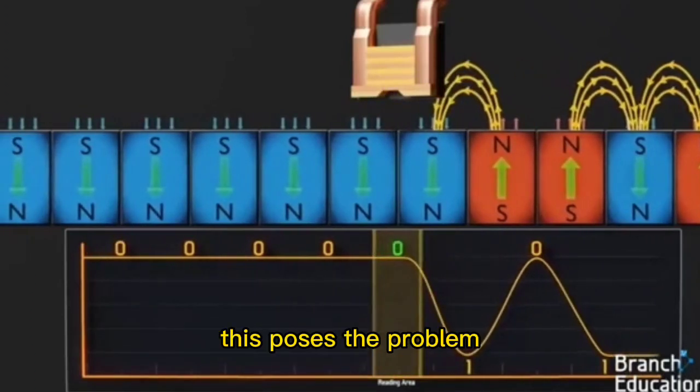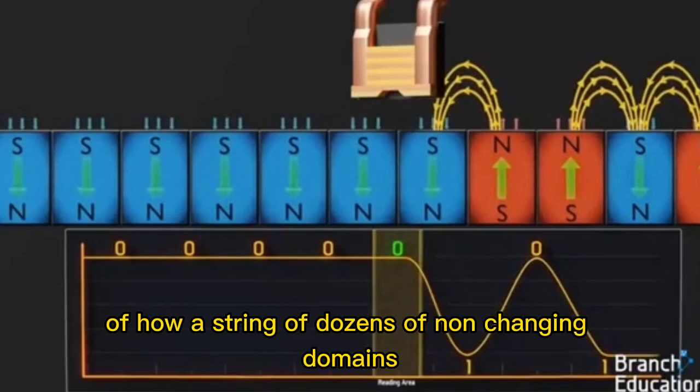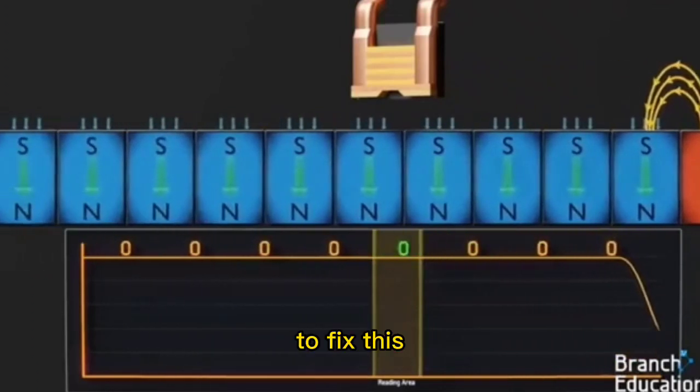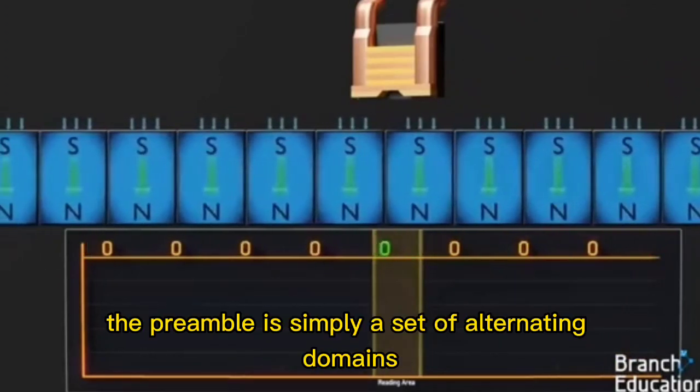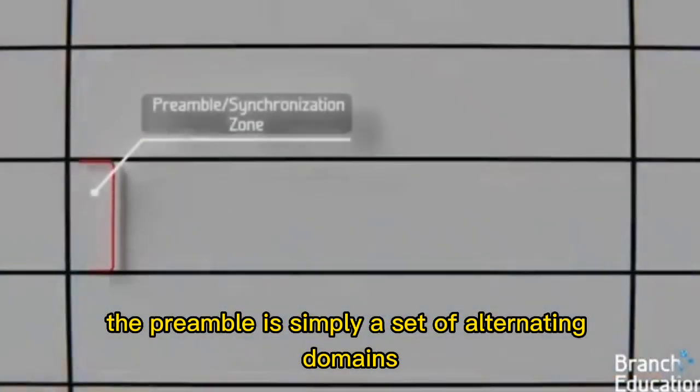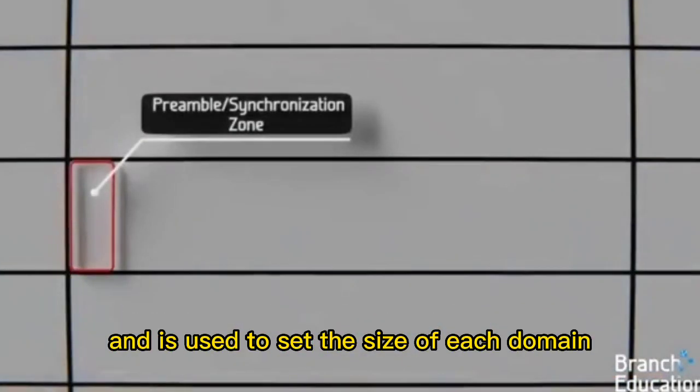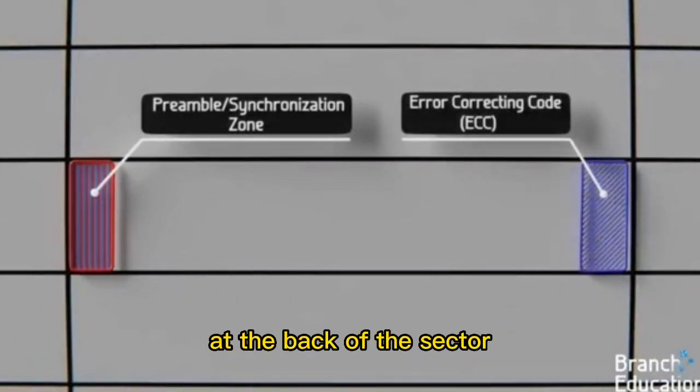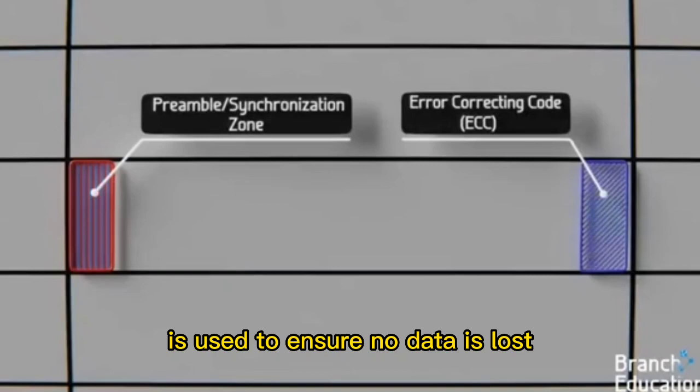However, this poses the problem of how a string of dozens of non-changing domains can result in an ambiguous number of 0s. To fix this, in each sector, the preamble is simply a set of alternating domains and is used to set the size of each domain. And then, the error correcting code at the back of the sector is used to ensure no data is lost.